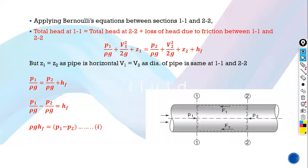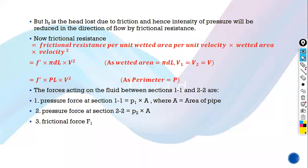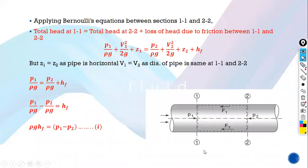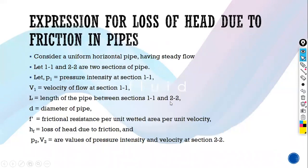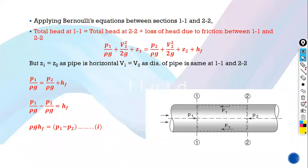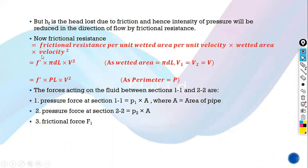Last time we calculated the forces on the pipe. In this derivation, we applied Bernoulli's equation at sections 1 and 2 and arrived at the equation: rho G HF is equal to P1 minus P2. Then we derived the value of frictional resistance, that is F' into P L V squared. Now we are going to sum up the forces acting on the pipe.